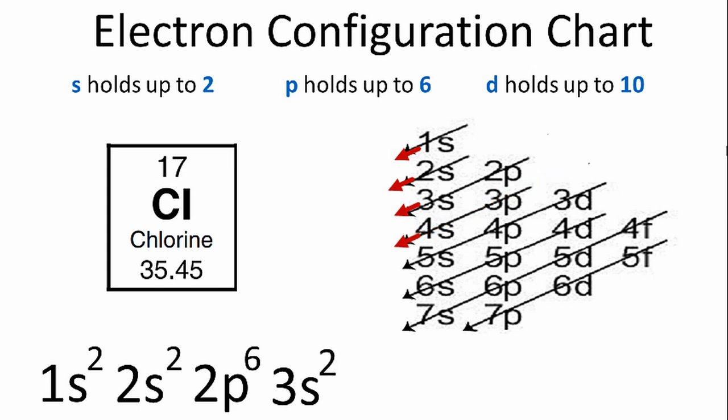And then we'll go down this row here where we have the 3p. And p holds up to six. But since we have 12, we only need five more to get 17. That's the electron configuration for chlorine.